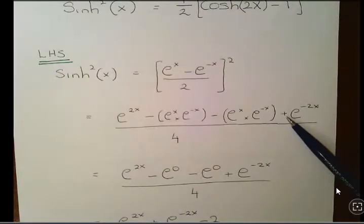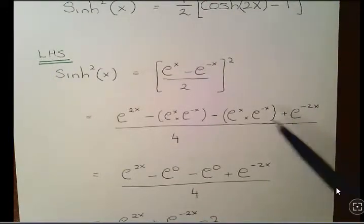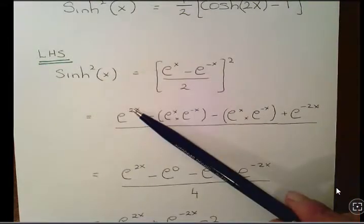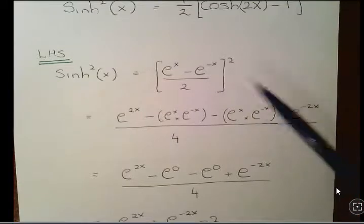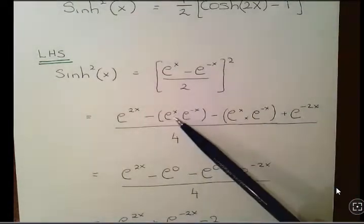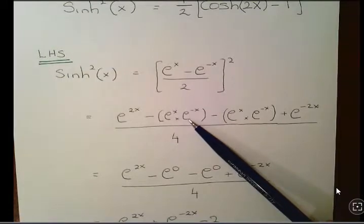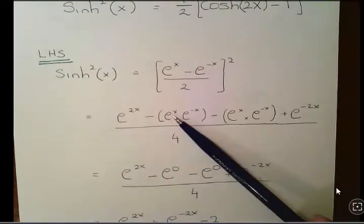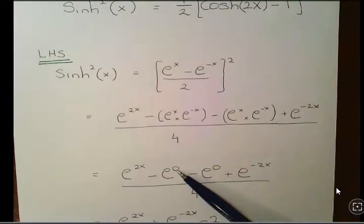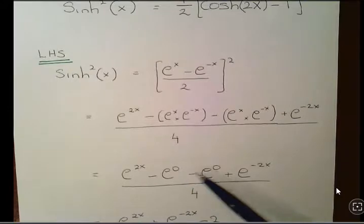We have plus e^(-2x). Just watch the sign there. Also remember that e^x squared is e^(2x), and e^(-x) squared is e^(-2x). So e^x times e^(-x)—what you do is add the two powers, so x plus minus x gives us zero, ending up with e^0.